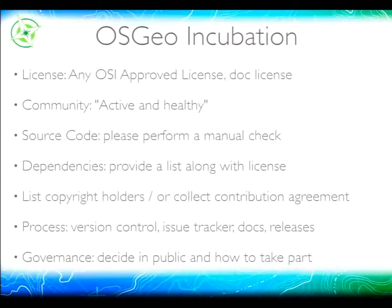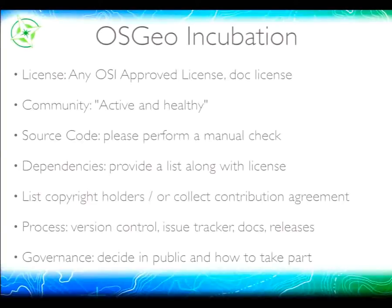For dependency checks, OSGEO just asks you to list dependencies and their licenses — they don't actually check the source code of all dependencies. Projects are also required to use version control and an issue tracker. In governance, OSGEO emphasizes public decision-making: all project decisions should be made publicly, not behind closed doors, and other volunteers must be able to participate — either through a request-for-change process or by earning commit status over time.